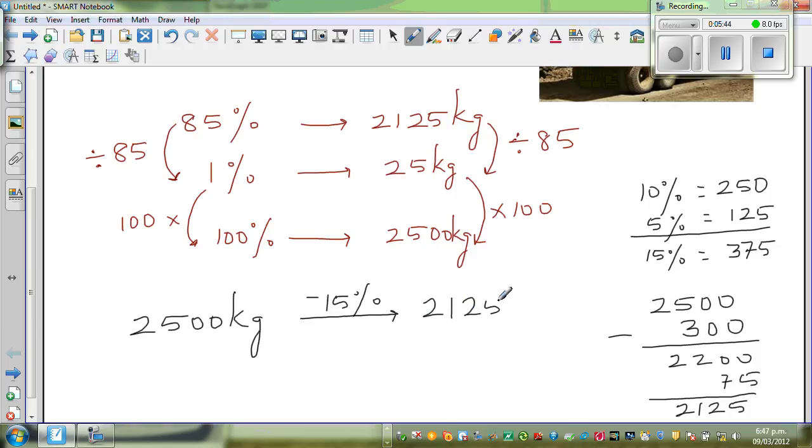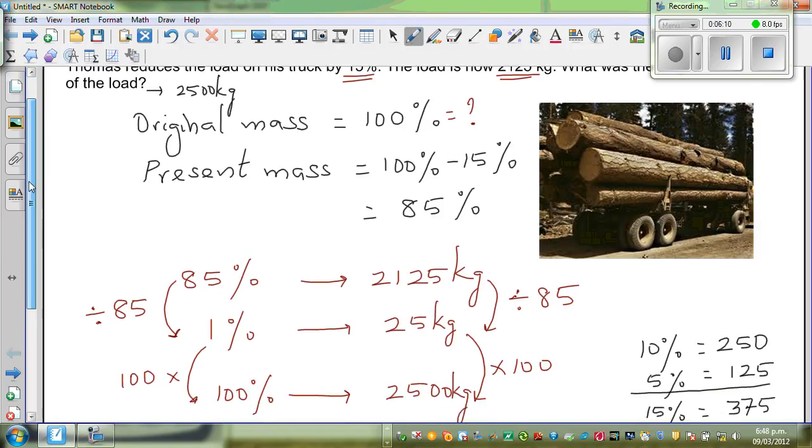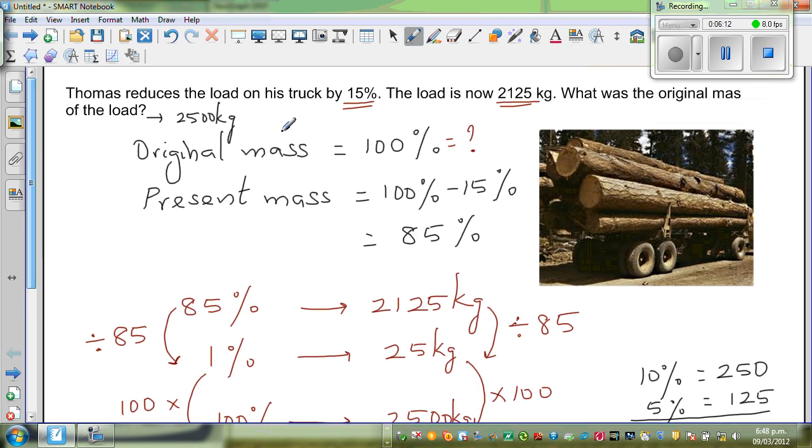This is 2125 kg. So let's read the question again to confirm. It had an original weight and it was reduced by 15%, and the present weight is 2125. So the original weight is 2500 kg. This is how you can work out the original amount using proportional thinking without getting involved in any formula.